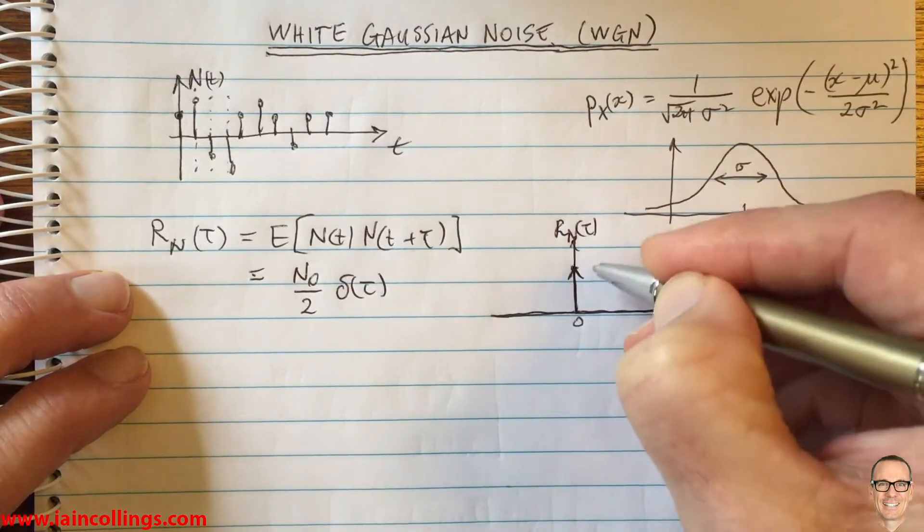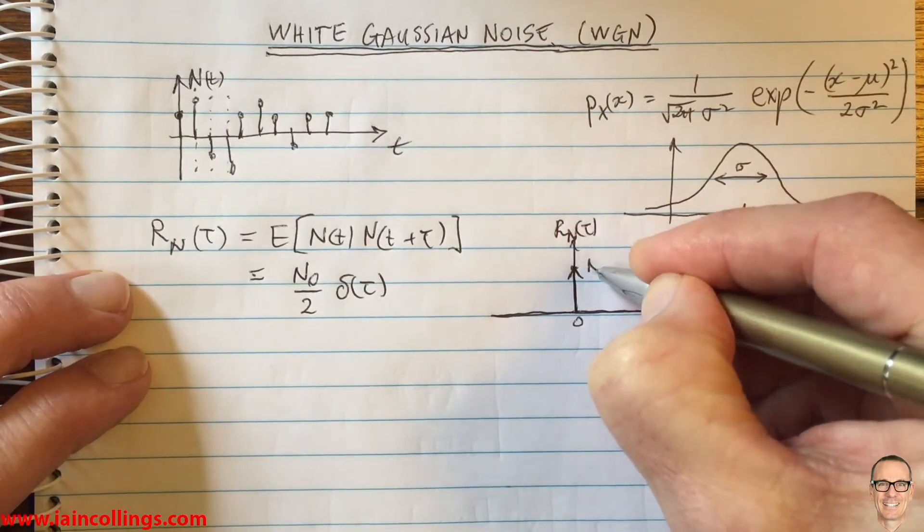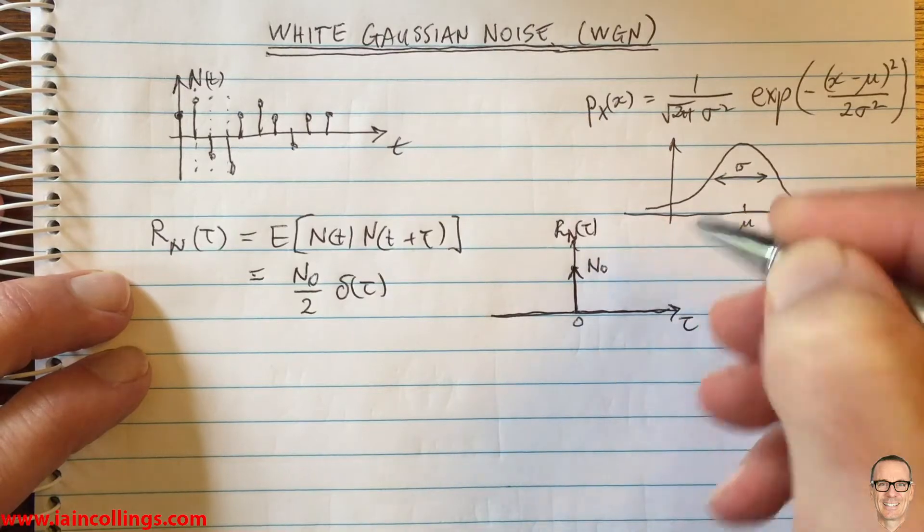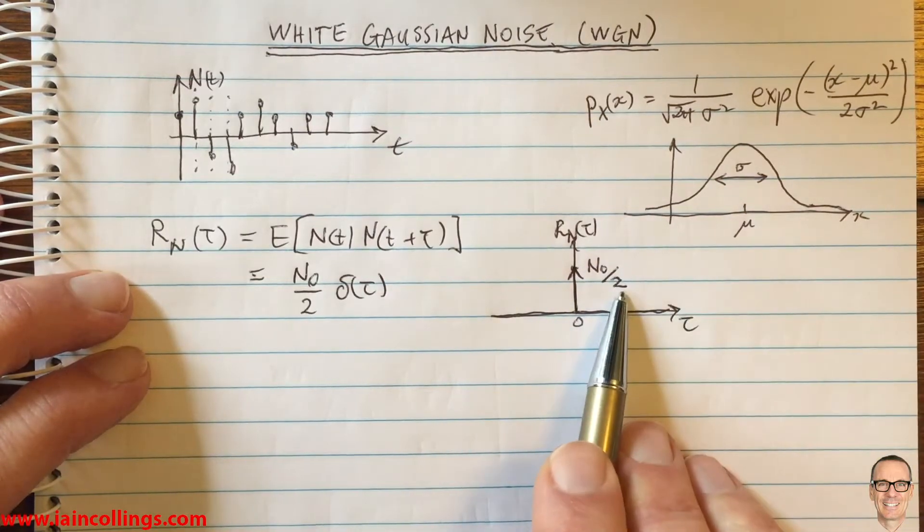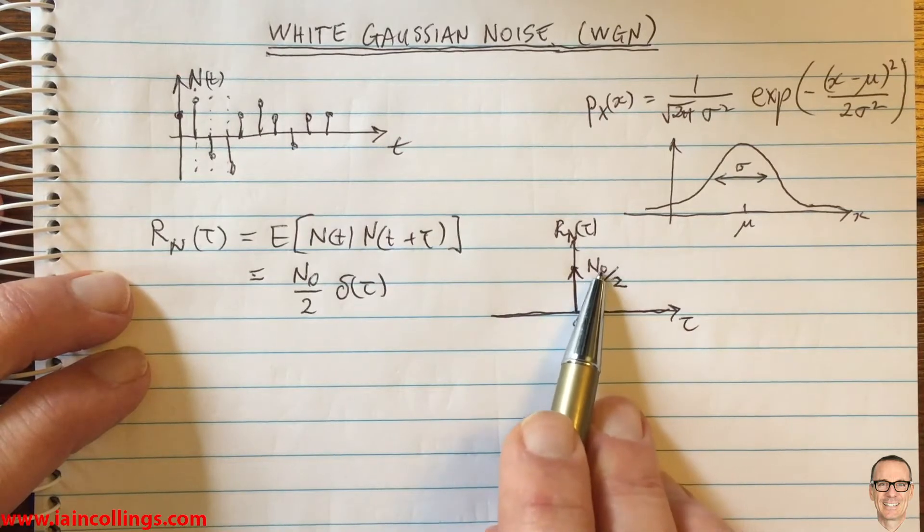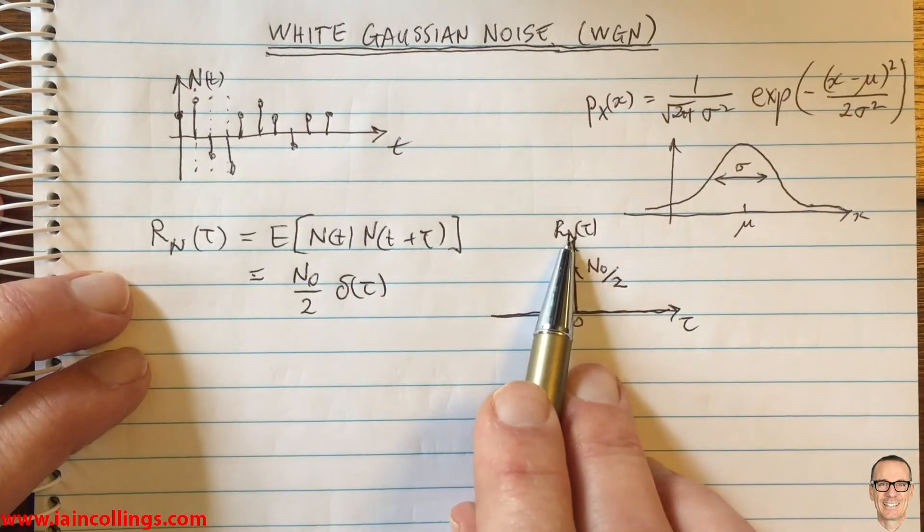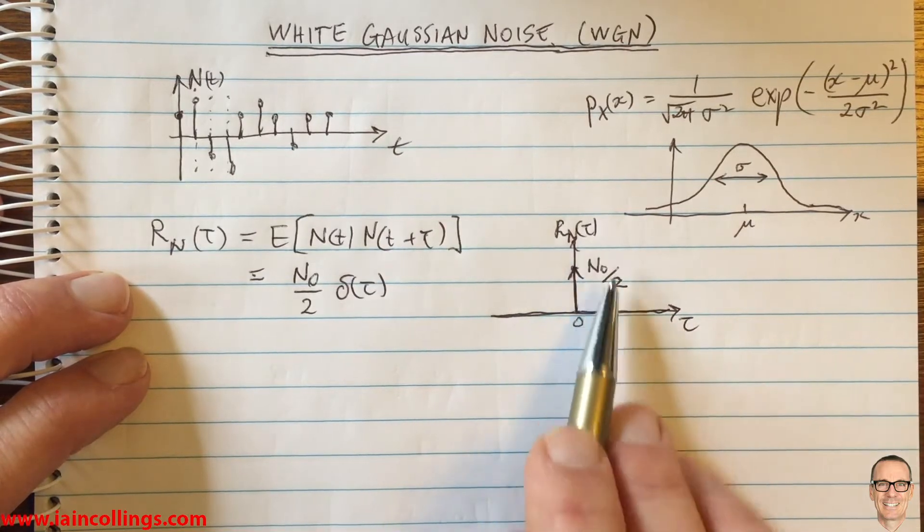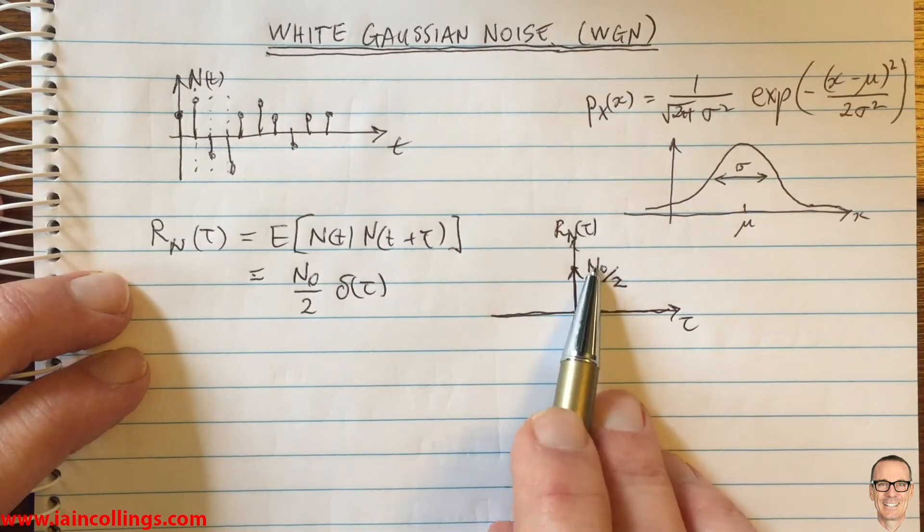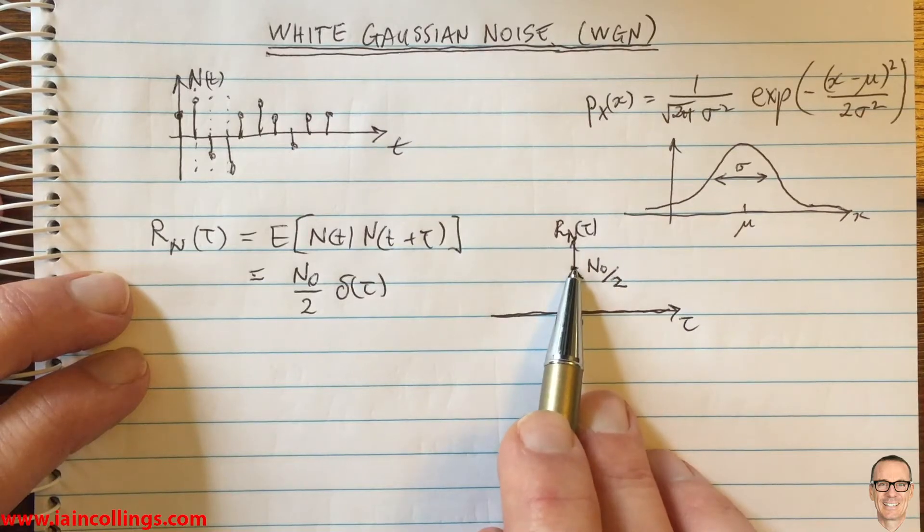For that reason, we're going to label this height - we'll see why in a minute. We're going to label that N naught divided by two. The N naught is because it is the autocorrelation for the noise n at tau equals zero. That's why we call it N naught, N zero or N naught - that's the height of that delta function.